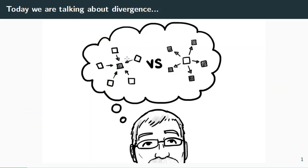Divergence is this notion of whether — take a fluid for example, and the vector field is giving you the velocity of that fluid — is the fluid sort of coming together at a point, or is the fluid expanding at a point? Do you have a source or a sink? Negative divergence would be the notion of a sink, positive divergence would be the notion of a source. And if neither of these things are happening, if the fluid is just sort of moving downstream, then maybe there's no divergence.